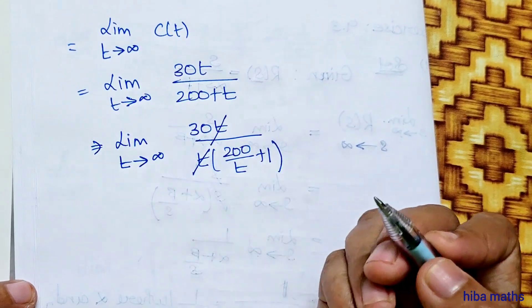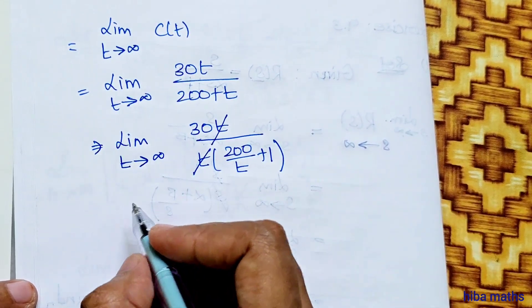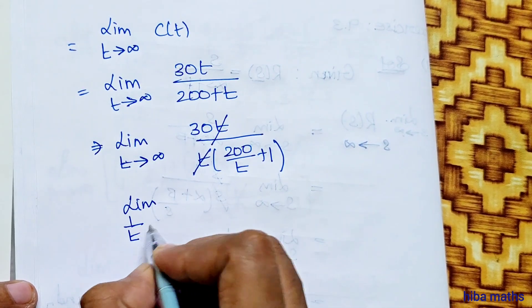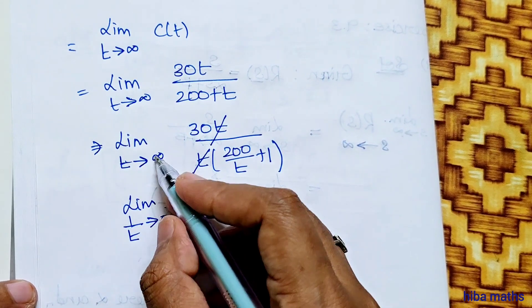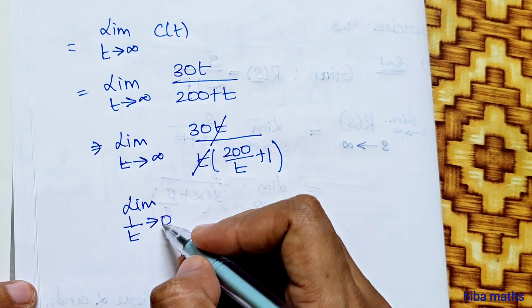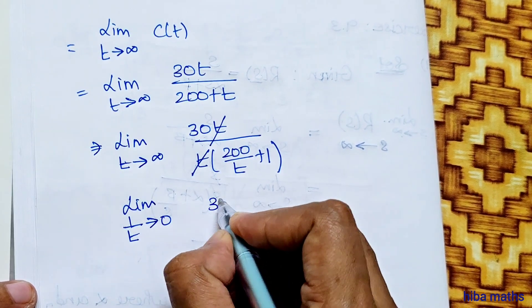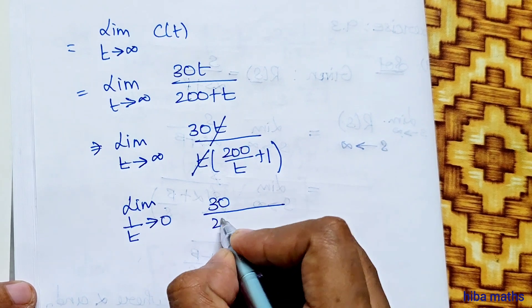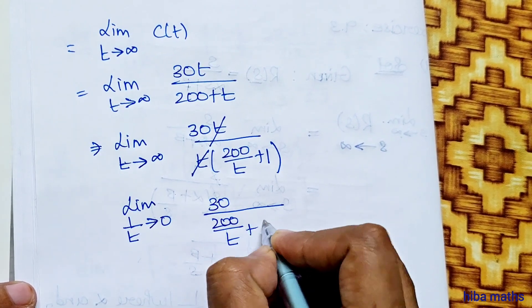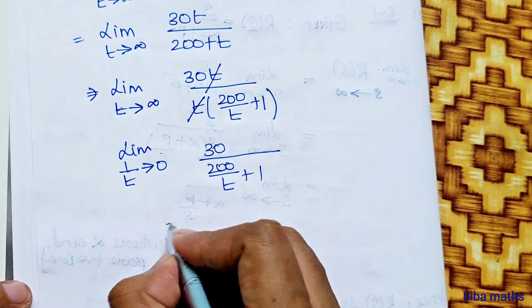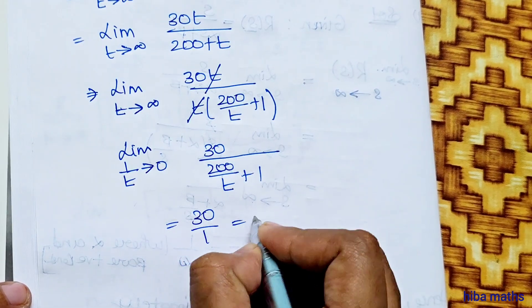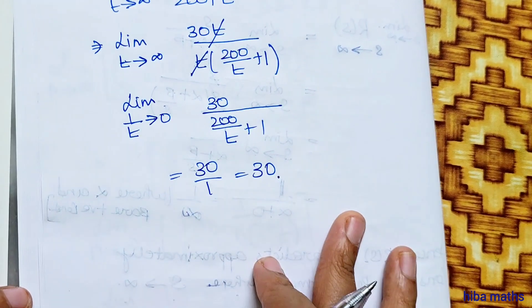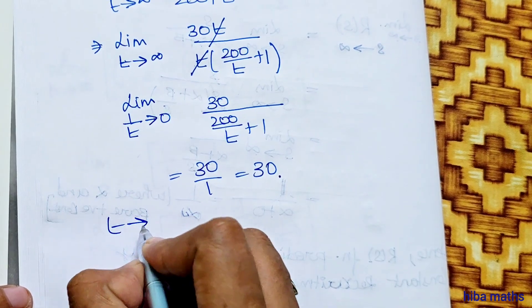Dividing numerator and denominator by t, the limit as t tends to infinity becomes 30 divided by (200 over t plus 1). As t tends to infinity, 200 over t equals 0, so we get 30 divided by (0 plus 1), which equals 30.